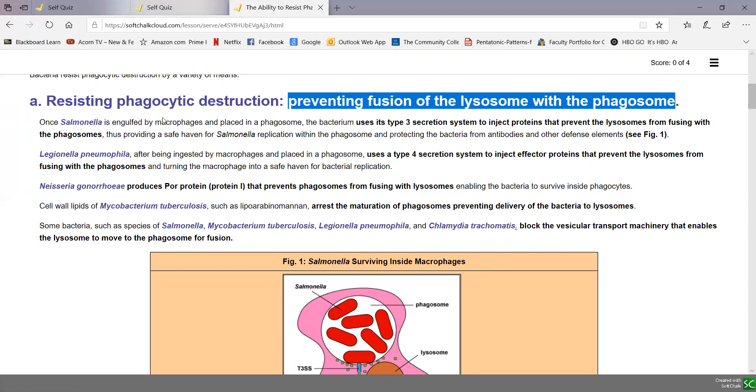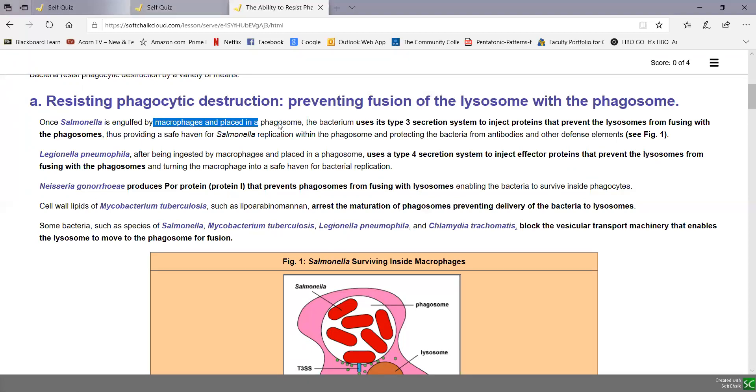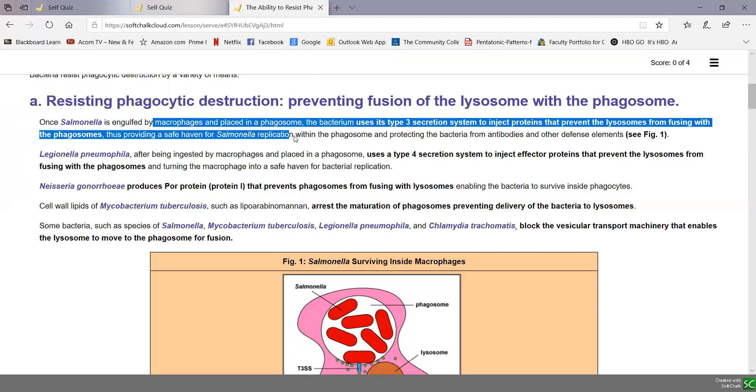For example, Salmonella, once it's engulfed by macrophages and put in a phagosome, uses a type 3 secretion system to inject proteins into the cytoplasm of the macrophage that prevents the lysosomes from fusing with the phagosomes. That provides a safe haven within the phagocyte for the Salmonella to replicate and be protected from antibodies and other defense elements.